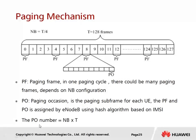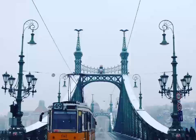The number of paging occasions in one cycle equals Nb times T, where T is the paging cycle and Nb is a parameter whose value could be T/4, T/2, T, 2T, or even 4T. The setting of Nb affects the number of paging occasions, determining how many radio frames and paging subframes will be used to carry paging messages.